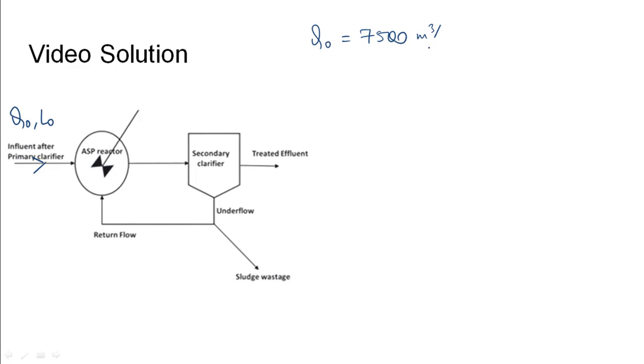7500 meter cube per day and L0 is given as 200 mg per liter. We need to reduce this to a level of Le that is given as 20 mg per liter. The wastage flow needs to be found. The return flow can be assumed as Qr, which would get added to the incoming flow that is Q0.